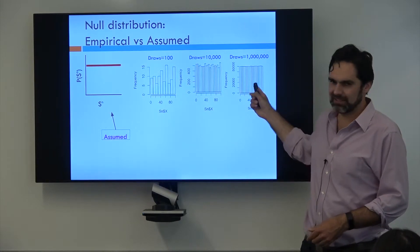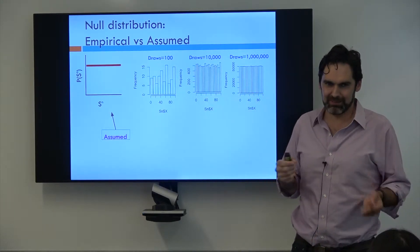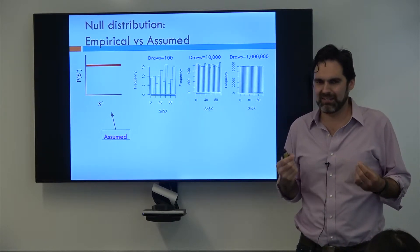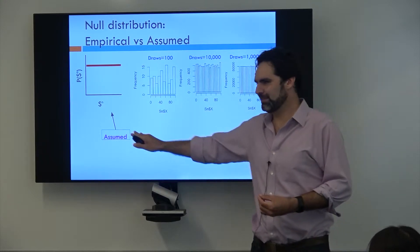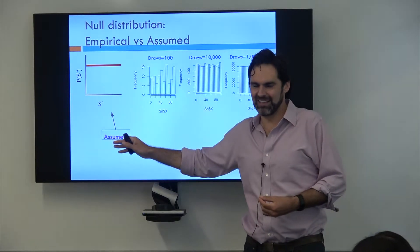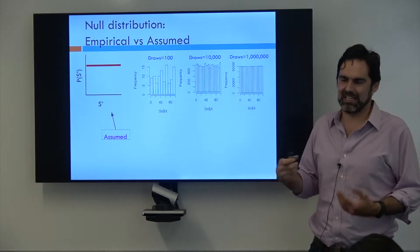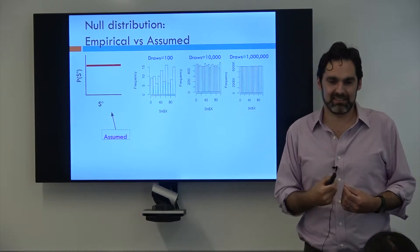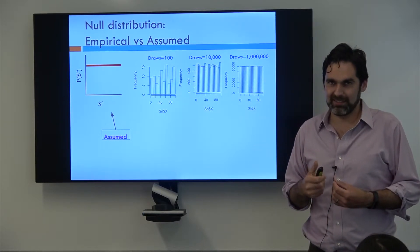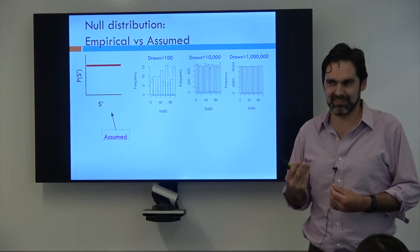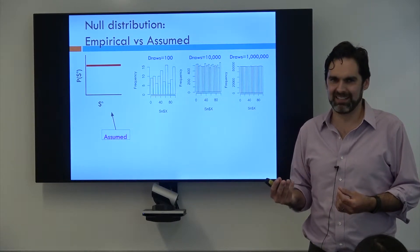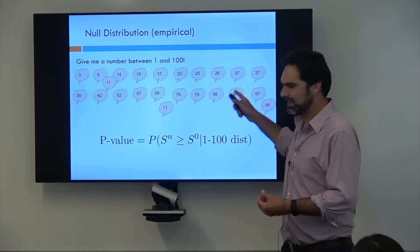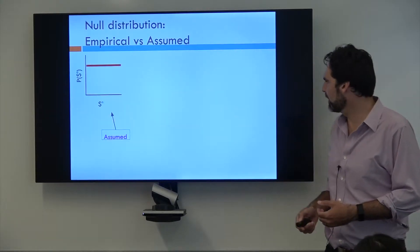The problem is it takes a really long time to ask a million people what their number between 1 and 100 is. Rather than doing that, I could just assume it's going to be a uniform distribution and go with it from there so I don't actually have to ask everybody. If there's a uniform distribution and somebody says 97, there's only three values higher than that, so my p-value is 0.03. I don't actually have to count everything up because I know what the probabilities are.